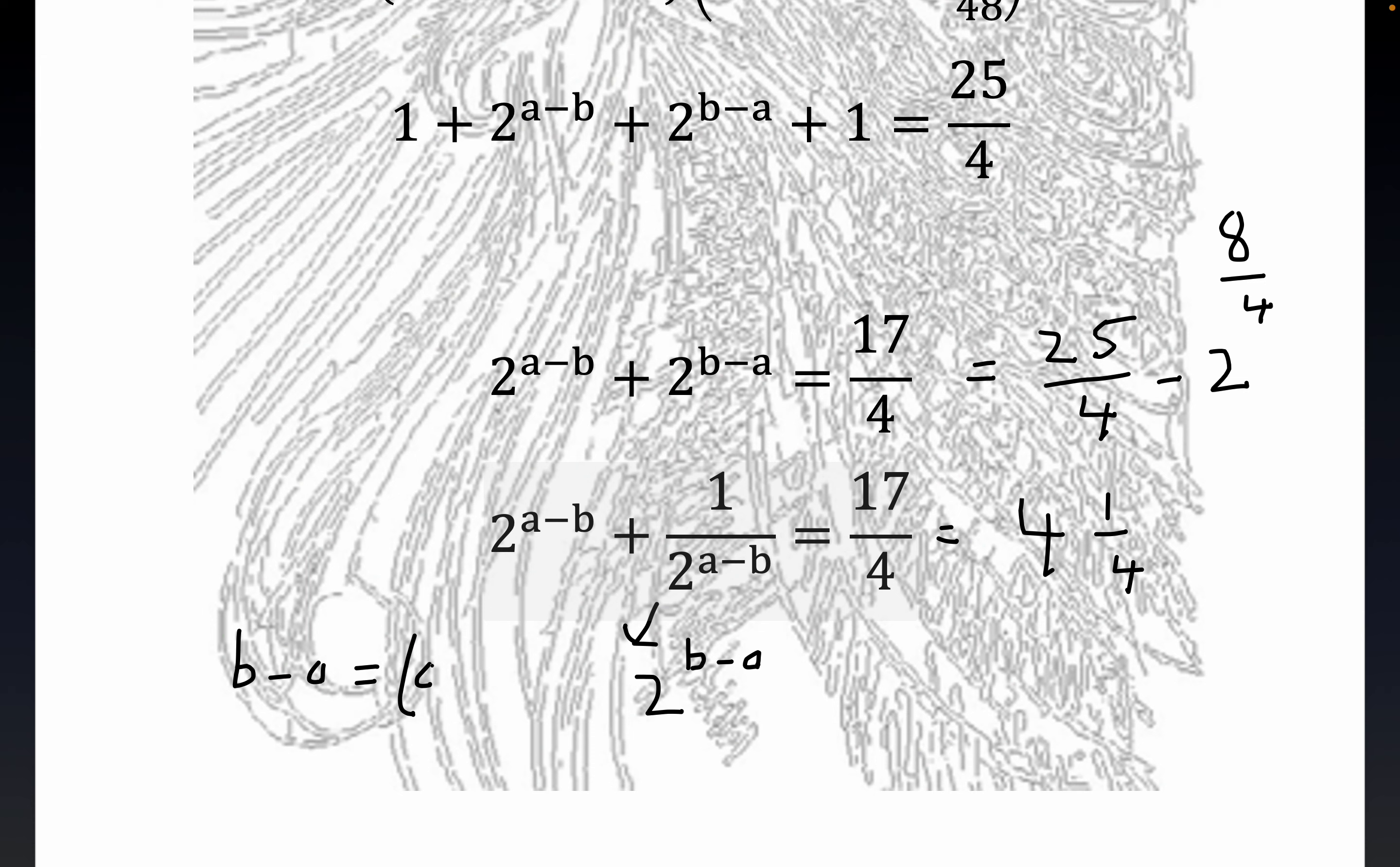Let me finish writing this. And so, clearly, 2 to the B minus A, this is equal to that. And really, this step wasn't particularly necessary, I guess. But this is equal to 1 fourth.